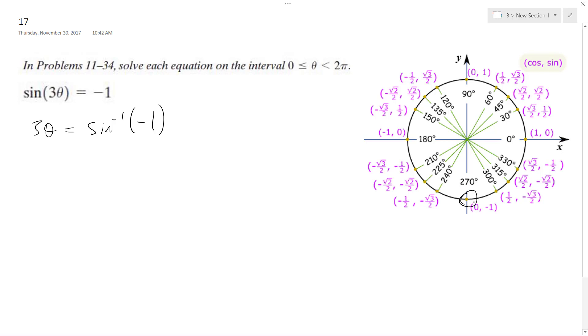Inverse sine of negative 1 is down here, so it's equal to 3 pi over 2. So 3 theta equals 3 pi over 2.